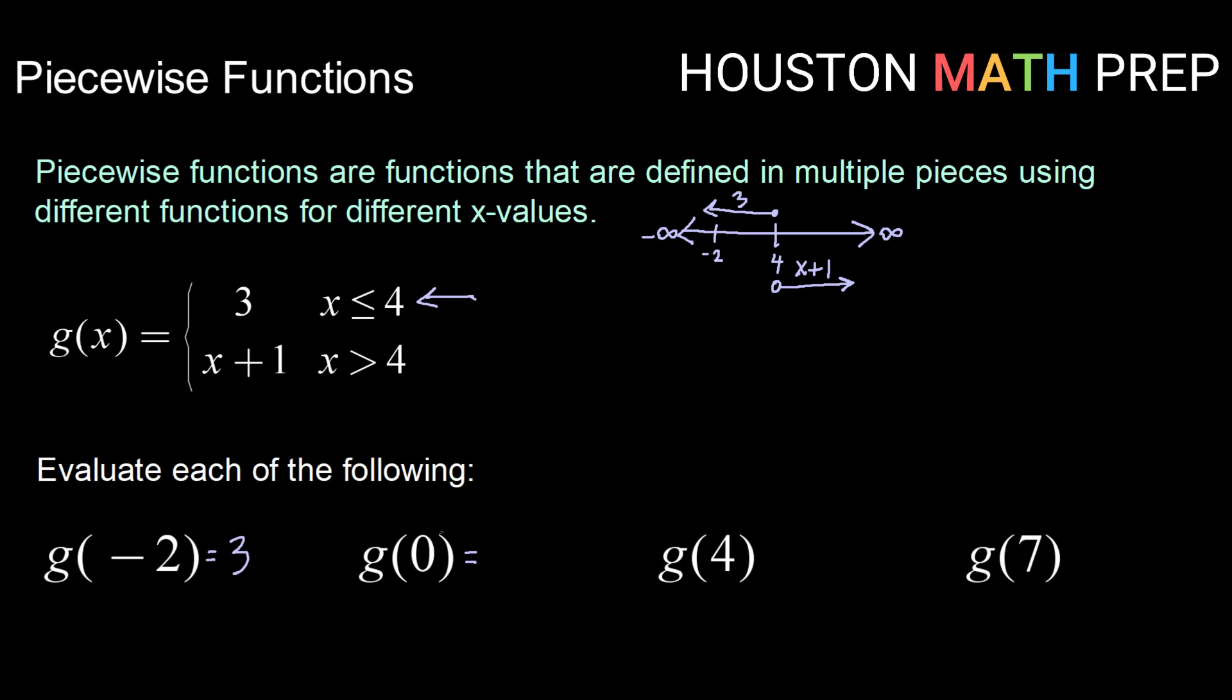g of zero. Once again we need to begin by determining which piece does zero fall into. So thinking about our number line zero would be somewhere about here. Which means that we would again be using this piece of our piecewise function. So g of zero would be three.